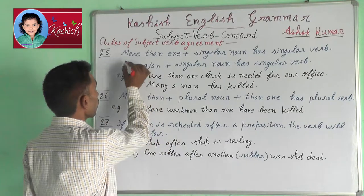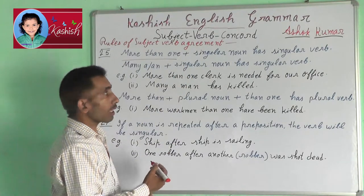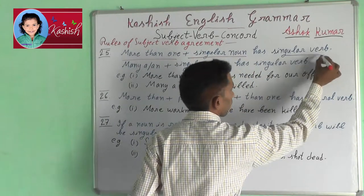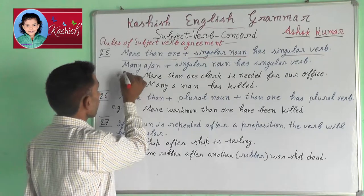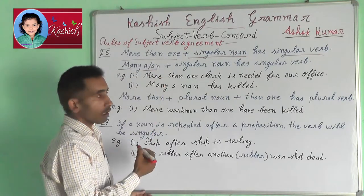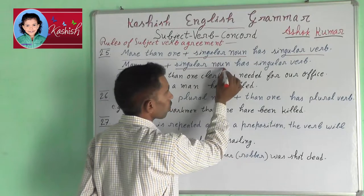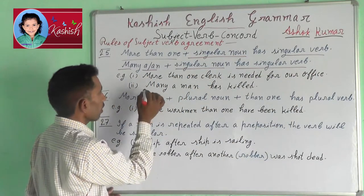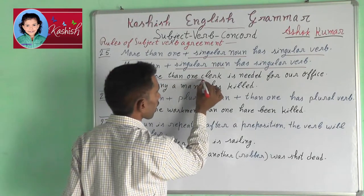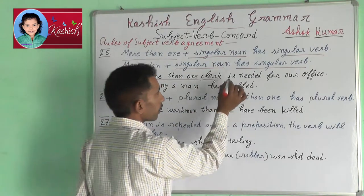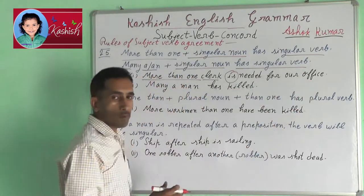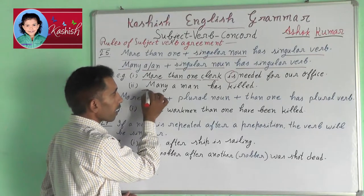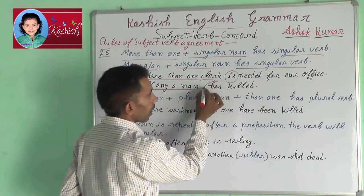Rule 25: More than one plus singular noun takes a singular verb. Many a or an plus singular noun also takes a singular verb. For example: more than one color is needed for our office. Many a man has killed.